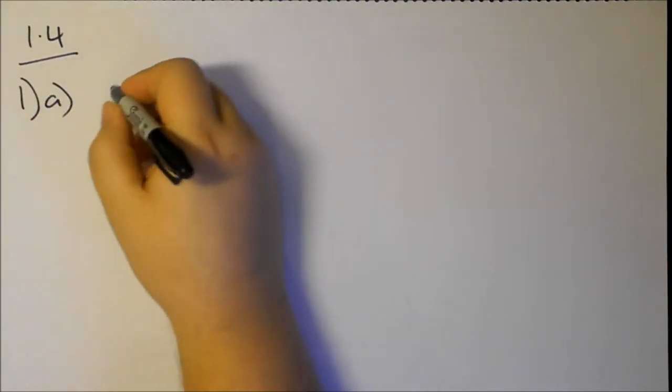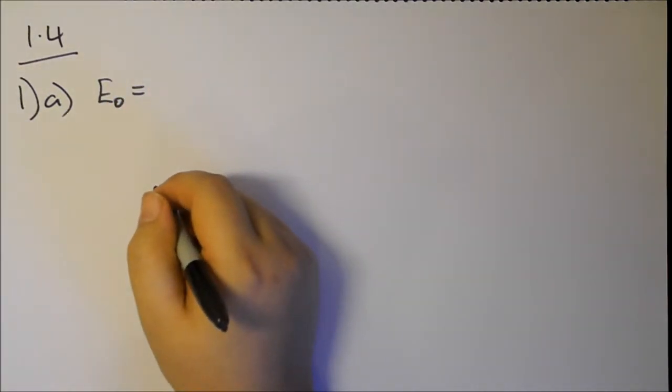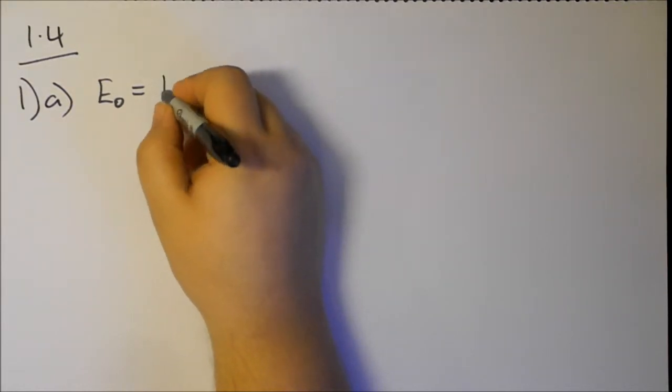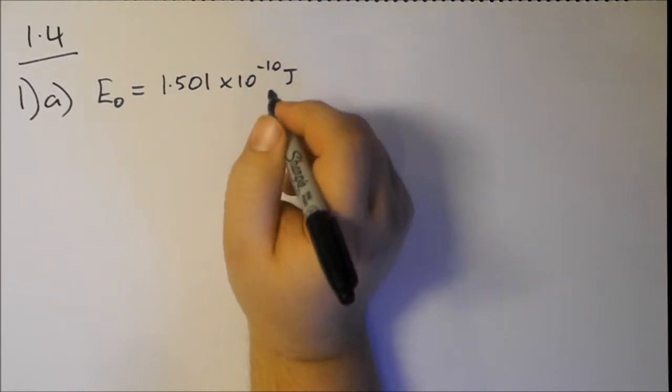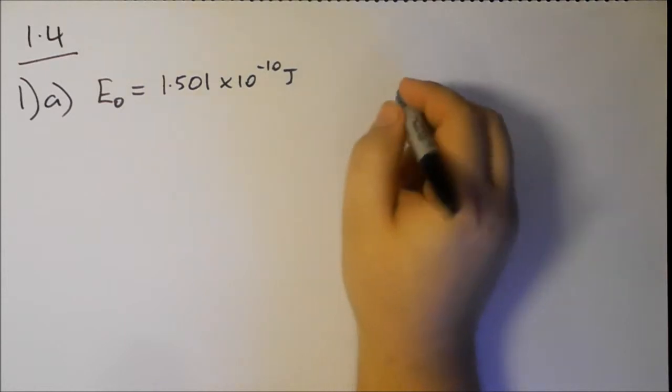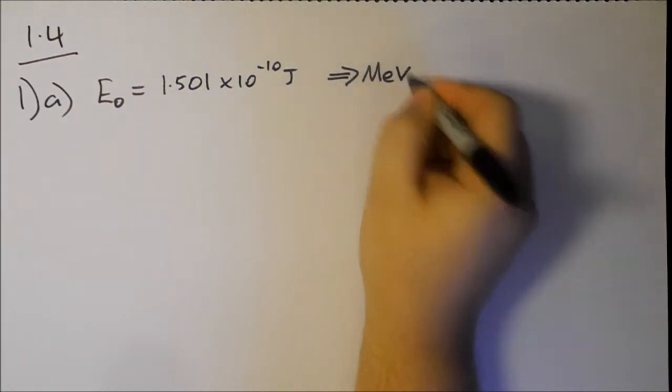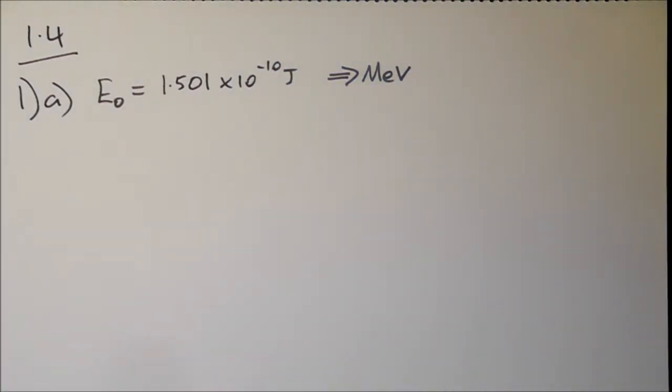End of topic questions 1.4. These questions are all based on the section of the book on particles and antiparticles. Question 1: the rest energy of a photon is 1.501 times 10 to the minus 10 joules. It says to calculate it instead of in joules, in MeV, mega electron volts.